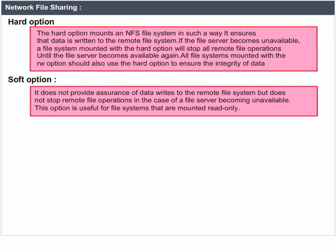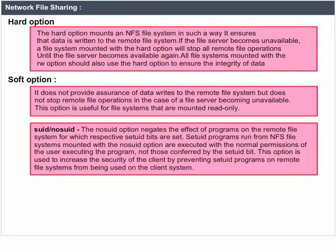Soft option: it does not provide assurance of data writes to the remote file system, but does not stop remote file operations when a file server becomes unavailable. This option is useful for file systems that are mounted read-only. No SUID: the NO SUID option negates the effect of programs on the remote file system for which the set UID bits are set. Set UID programs run from NFS file systems mounted with the NO SUID option are executed with the normal permissions of the user, not those conferred by the set UID bits. This option is used to increase the security of the client.